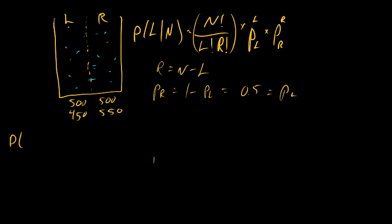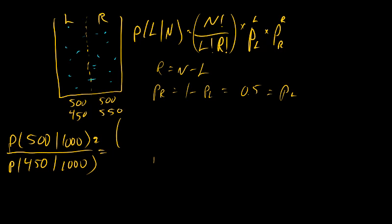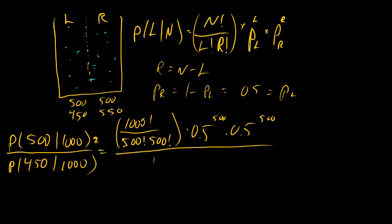The way I would set it up is doing the probability of seeing 500 on the left given 1000 molecules, and I want to compare that to the probability of seeing 450 on the left given 1000 molecules. This whole thing is equal to, we have the top part, which would be 1000 factorial over 500 factorial times 500 factorial. And the probabilities are 0.5 raised to the 500 and 0.5 raised to the 500. I'm going to divide that by the same thing for 450. So we have 1000 factorial over 450 factorial times 550 factorial, and we have 0.5 to the 450, and 0.5 to the 550.